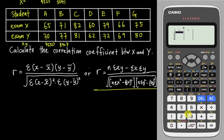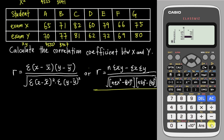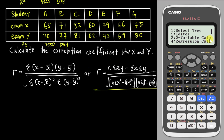Go to number 2 to enter data. Insert all the X values: 65, 71, 82, 60, 79, 66, 75. Then enter the Y values for exam Y: 70, 77, 81, 62, 72, 69, and finally 80.